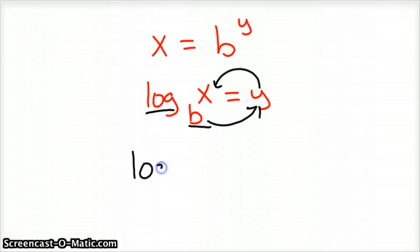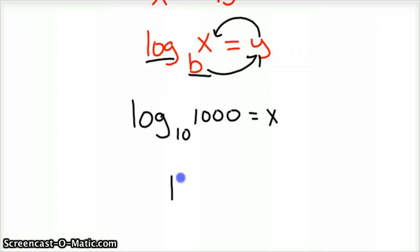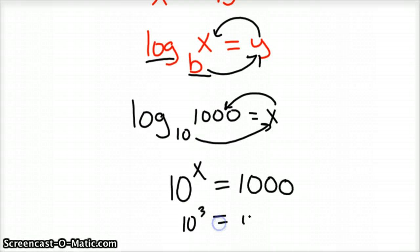So if you had log base 10 of 1,000, and we wanted to know what that was, we don't know what that is right now. So to figure that out, we know that 10 to the x power is equal to 1,000. So 10 to the x power is equal to 1,000. Well, we know 10 to the third power is 1,000. So we know log base 10 of 1,000 equals 3.